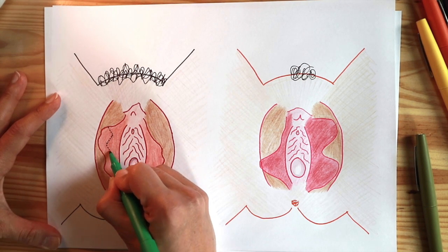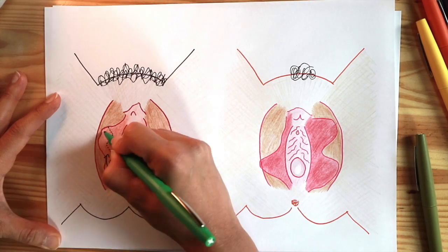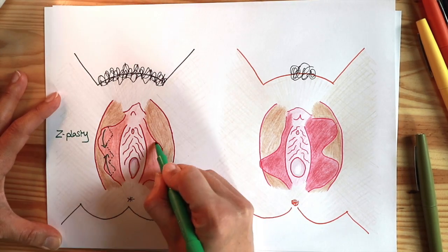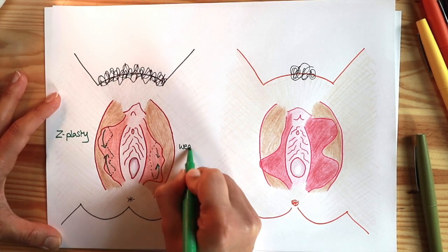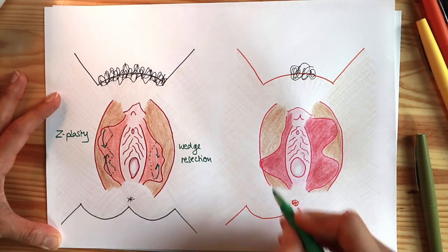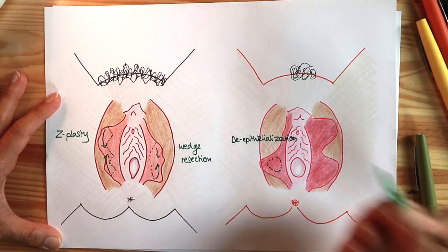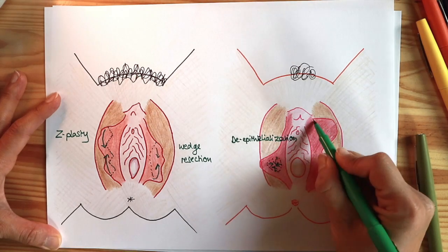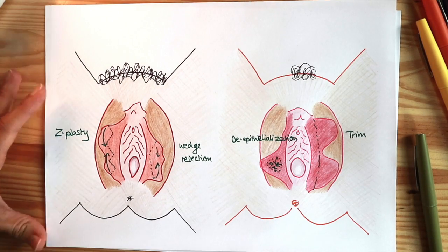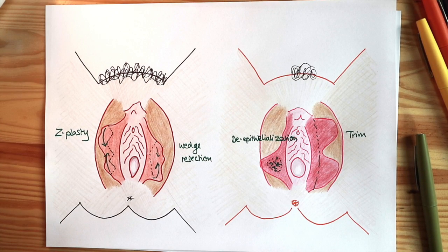And so labiaplasty means cutting the labia minora, so the fleshy lips, with an aim of reducing them in size. And that may be due to people finding them too large when they're doing sport or having sex, but also most likely done for cosmetic purposes to make them more symmetrical.